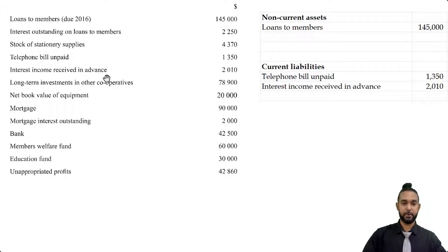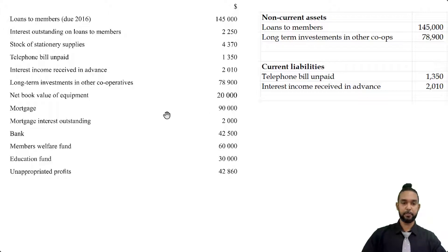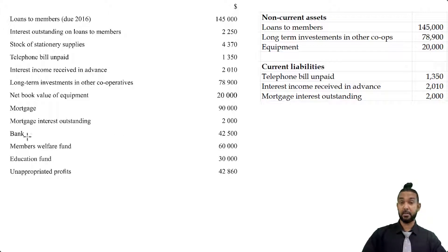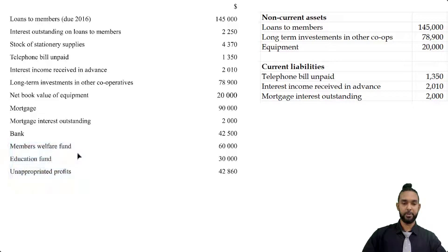Long-term investments in other cooperatives — an investment is an asset, and since it says long-term, that means it's non-current. So we add long-term investments in other co-ops to the non-current assets section. Next, net book value of equipment — equipment is a non-current asset, so that's the third item in our non-current assets list. Then we have mortgage, which is a non-current liability. Mortgage interest outstanding is a current liability. Bank is a current asset. And the three items — members welfare fund, education fund, and unappropriated profits — are capital reserves, so they are neither assets nor liabilities.